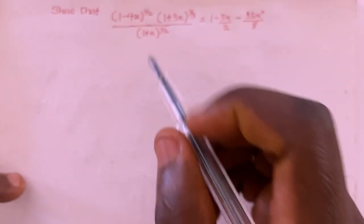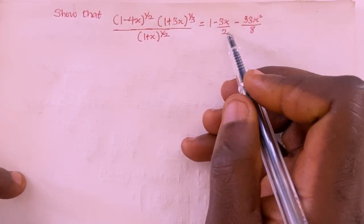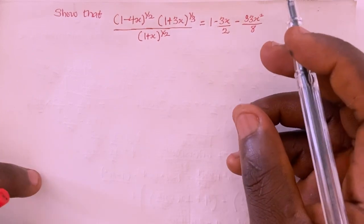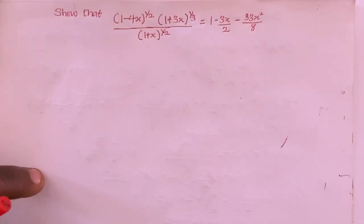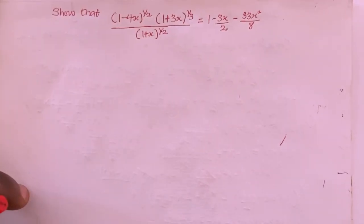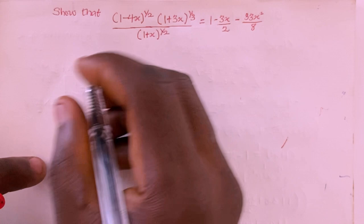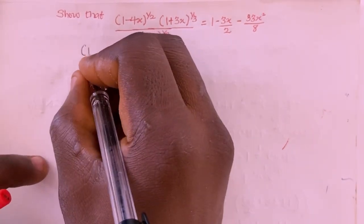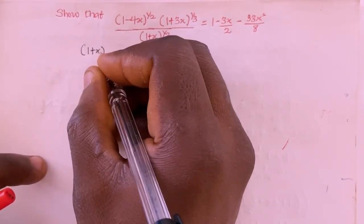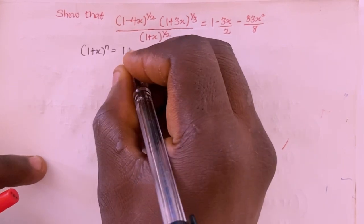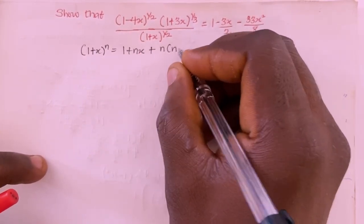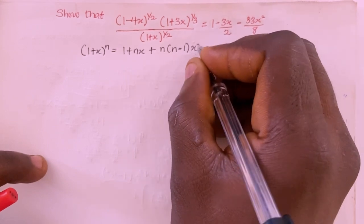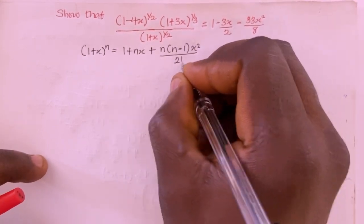The goal is to show that this expression is equal to a binomial expression. I'm going to record the general formula for the binomial expression for negative and fractional integers. That's (1 + x)^n which equals 1 + nx plus n(n-1)x² divided by 2 factorial, and so on.